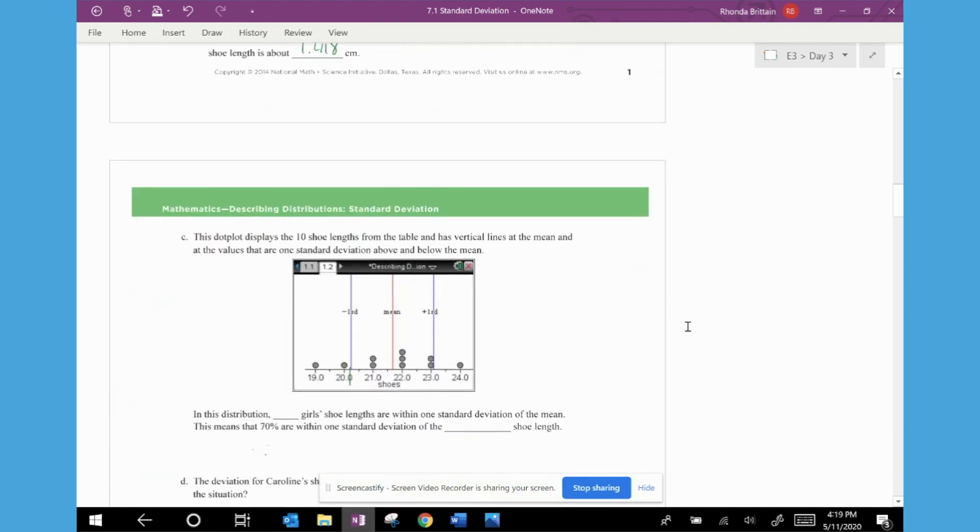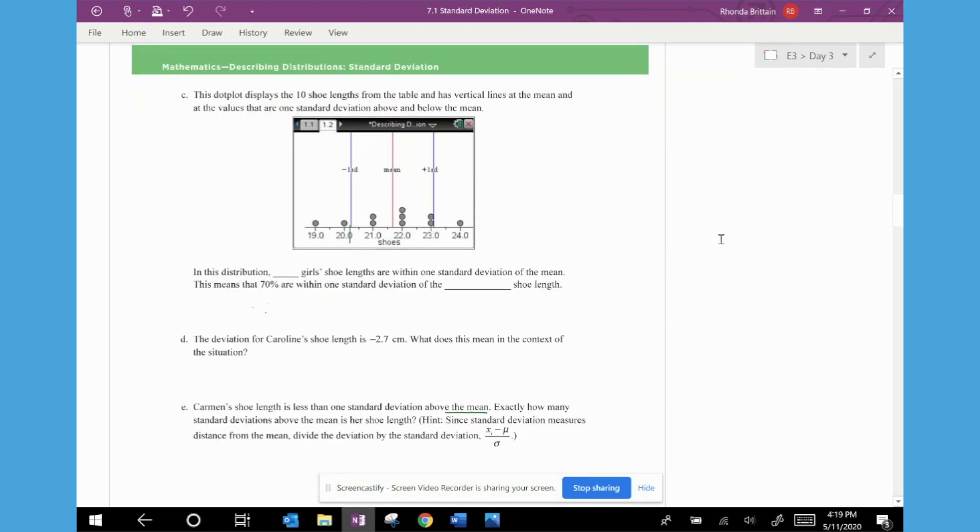If I move on to the next page, it's going to ask us just a few more questions about the distribution. So on C, it says this dot plot displays the 10 shoe lengths from the table and has vertical lines at the mean and at the values that are one standard deviation above and below the mean. So we can actually calculate what these numbers are. So if I take the mean of 21.7 and I subtract one standard deviation, I will get a number below the mean, which is 20.282.